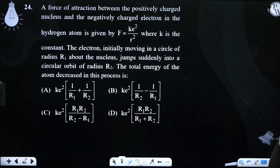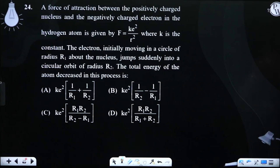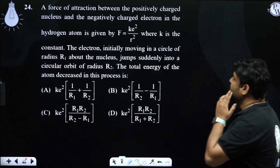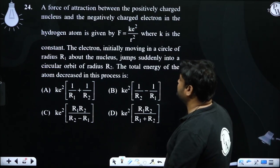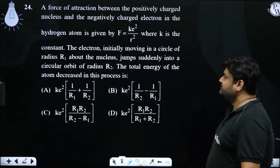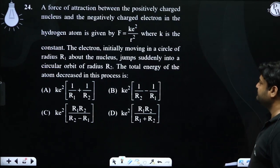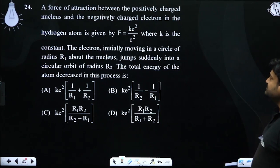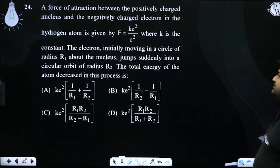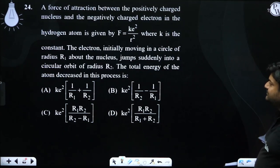A force of attraction between the positively charged nucleus and negatively charged electron in a hydrogen atom is given by this expression, where k is a constant. The electron is initially moving in a circle of radius r1 about the nucleus, then jumps suddenly into a circular orbit of radius r2. The total energy of the atom decreased in this process is what we need to find.